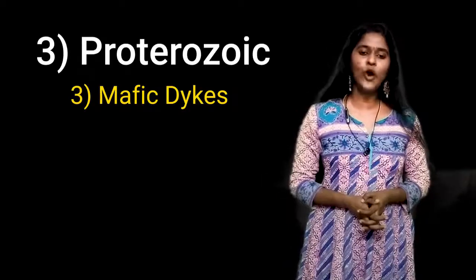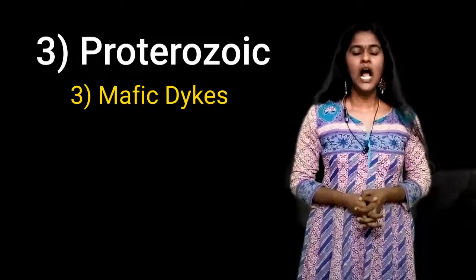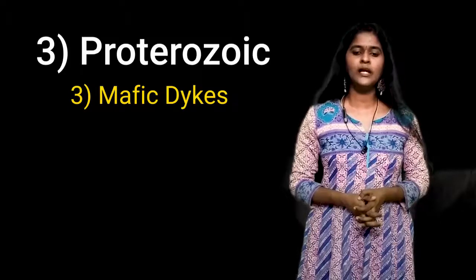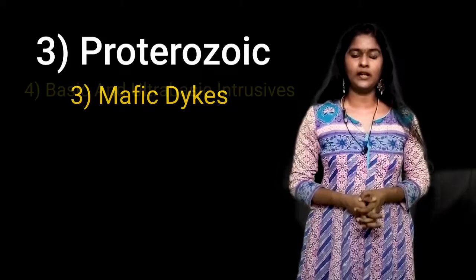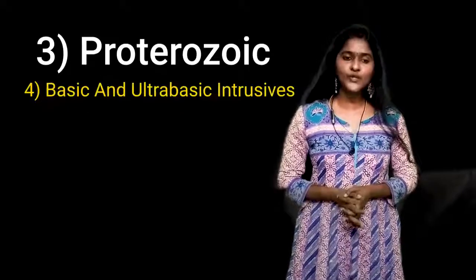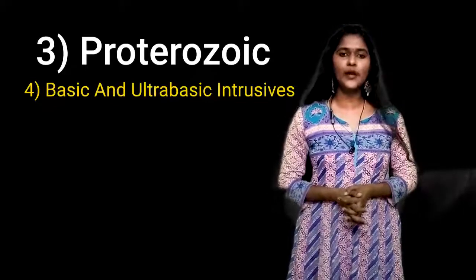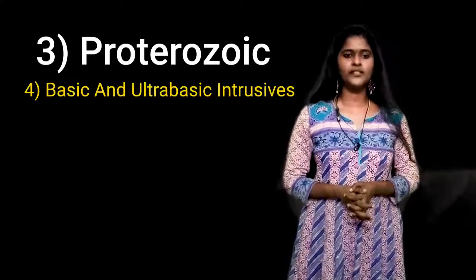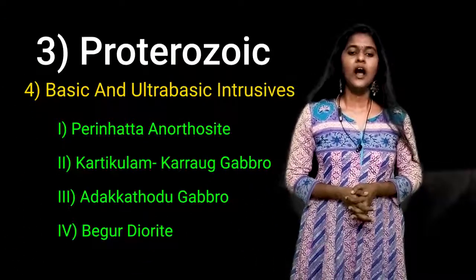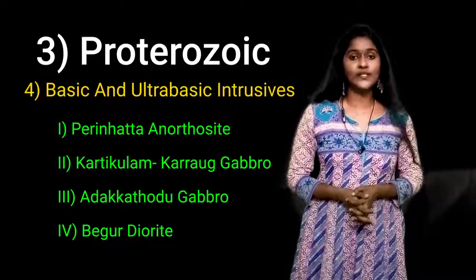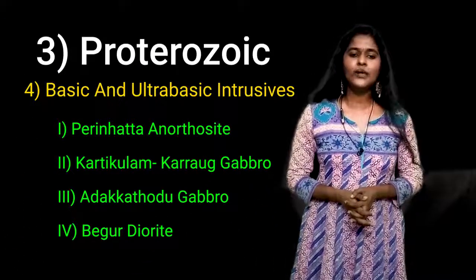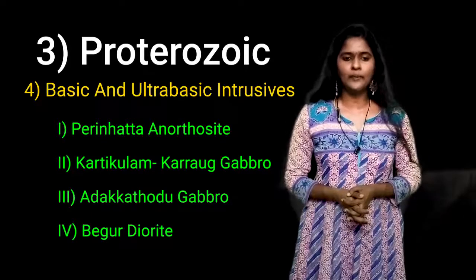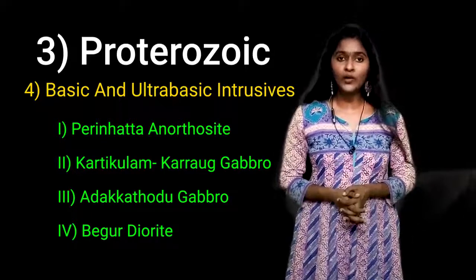Basic intrusive bodies are traced within the Achankovil Shear Zone in Valamudam and Kulashekhara Petta. The fourth category of Proterozoic Eon is the basic and ultrabasic intrusives, and it is again subcategorized into: Peringala Anorthosite, Kattikulam-Karavallur gabbro, Arakathod gabbro and Begur diorite.